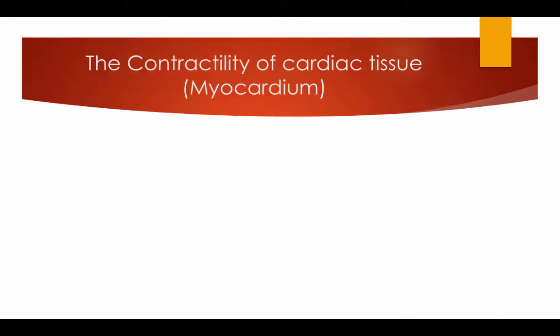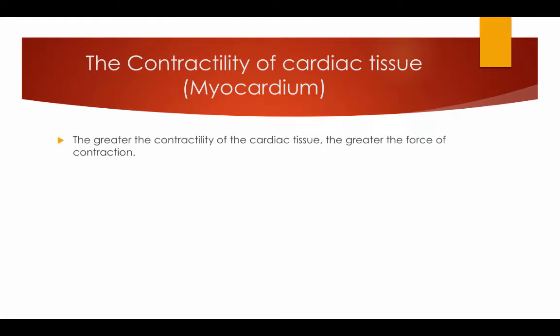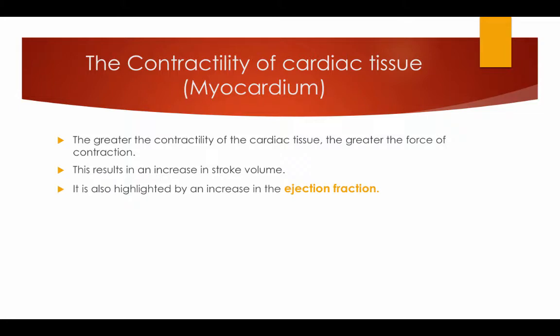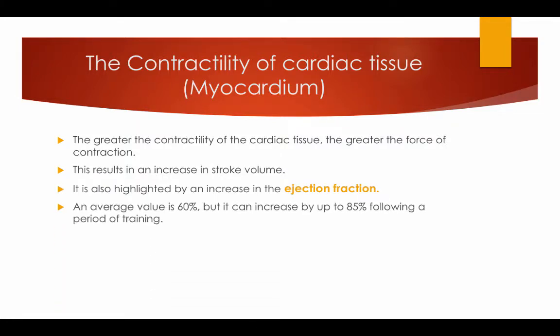The contractility of the cardiac tissue — the myocardium. The greater the contractility of the cardiac tissue, the greater the force of the contraction. This results in an increase in stroke volume, also highlighted by an increase in ejection fraction. An average ejection fraction is 60%, but it can be increased to about 85% following a period of training.